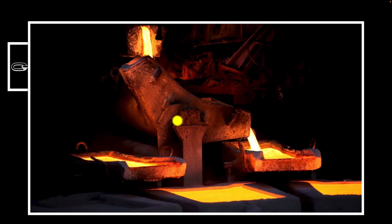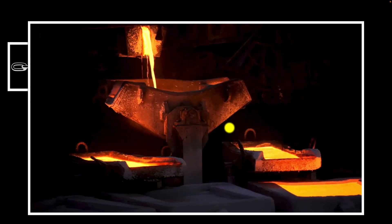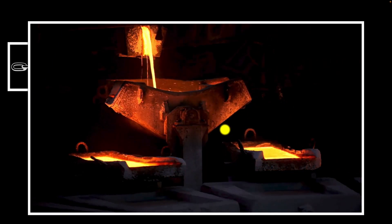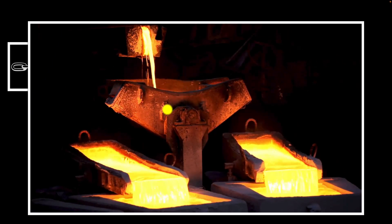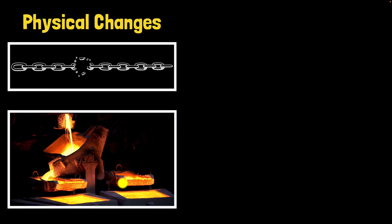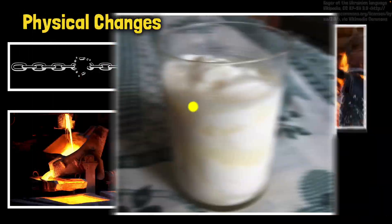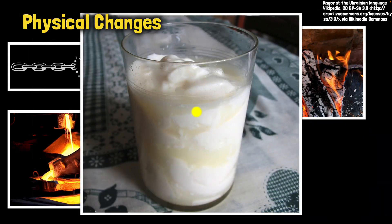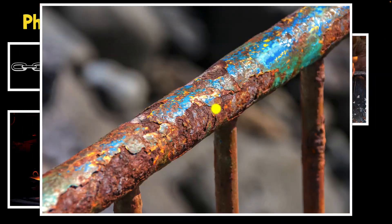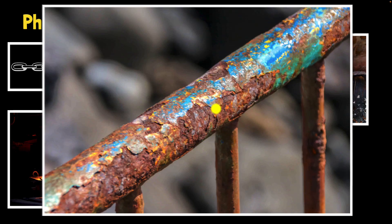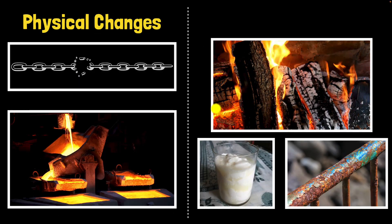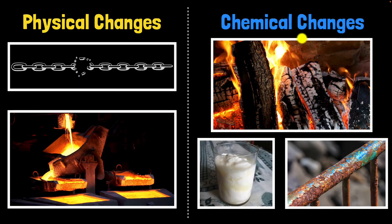When you break an iron chain or when you melt copper into liquid, the identity of the material does not change — you still have iron, and you still have melted copper. Such changes are called physical changes. But what about burning of wood, letting milk go sour, or letting iron rust? These are different. We call them chemical changes.